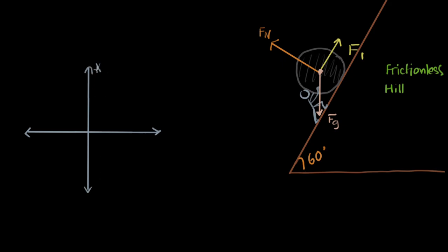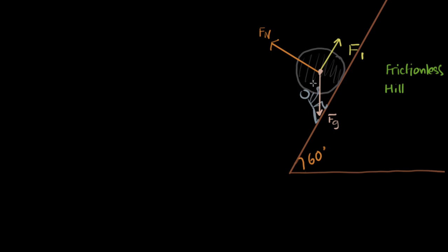The coordinate system has two axes, x and y. If you look here, these vectors are not really in x or y — they're between them. The F1 vector is right here and the normal force vector is right here. The only force which is in some axis is the force of gravity. So what I'm planning to do is convert these force vectors into their x and y component axes.